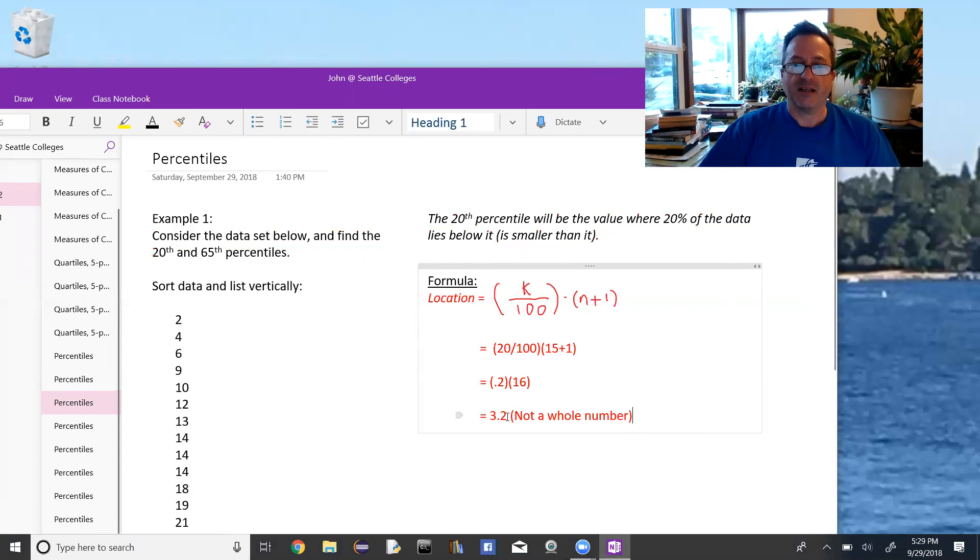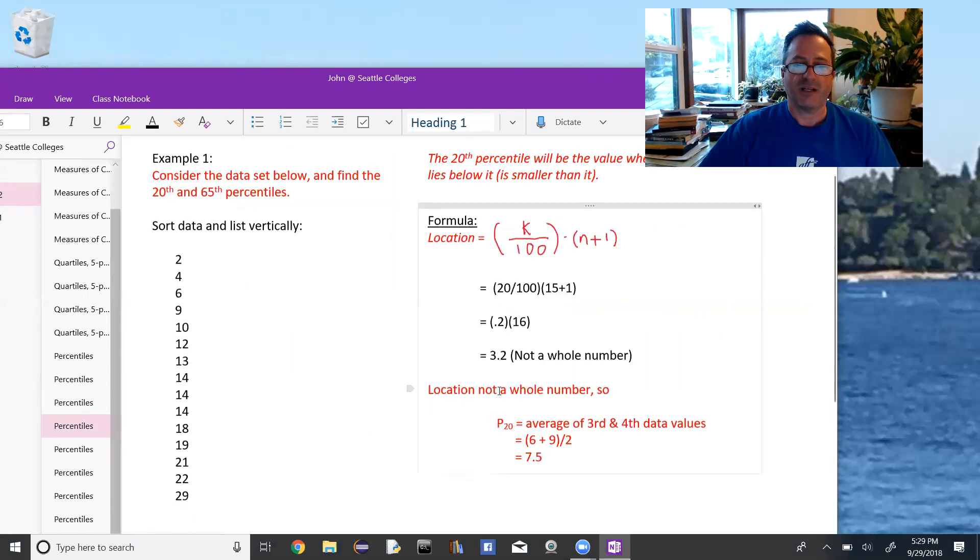And this is where we pause and we say, okay, this is not a whole number. 3.2 is not a whole number. If it was, suppose we just got 3, then the answer would be 6, because that's the third data value, but 3.2 is not a whole number, so we're going to look to go between the third and the fourth data values. So when it's not a whole number, we take the average of the two data values around it. That would be the third and fourth data values, or in this case, 6 and 9. 6 plus 9 is 15, divided by 2. The 20th percentile is 7.5. This means that 20% of the data lies below 7.5.